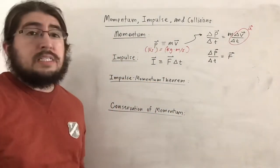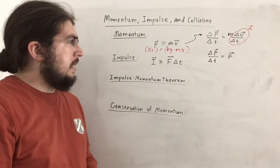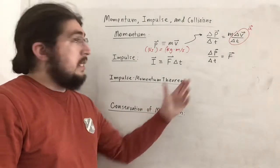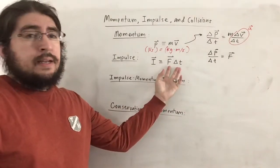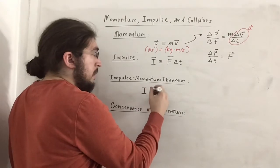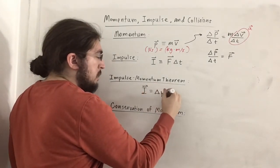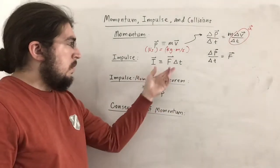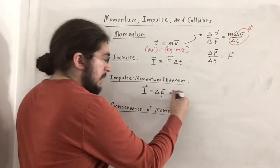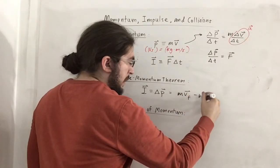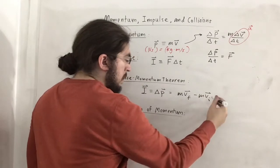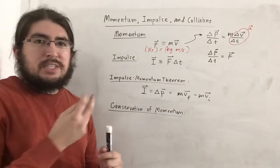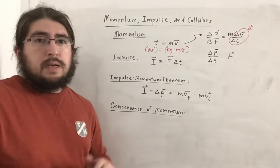So one can say that force is actually the rate of change in momentum. And if you multiply both sides by delta t, you get the impulse-momentum theorem: impulse equals change in momentum. So F·delta_t = delta p = mvf minus mvi. This tells us what impulse really is — just the change in momentum.